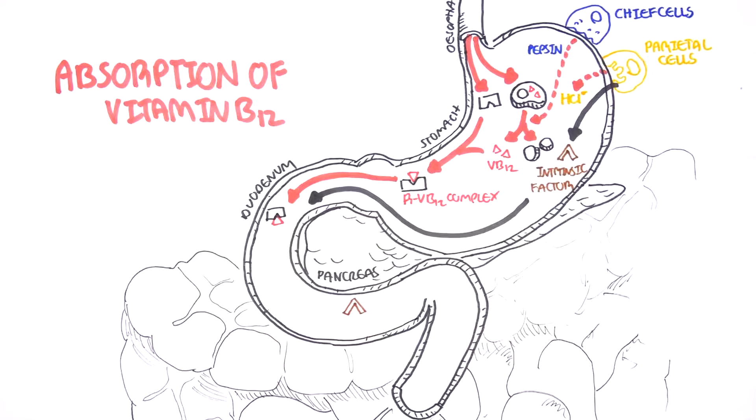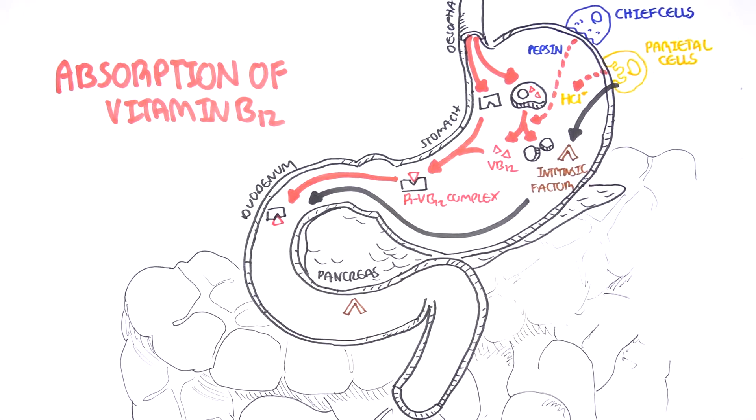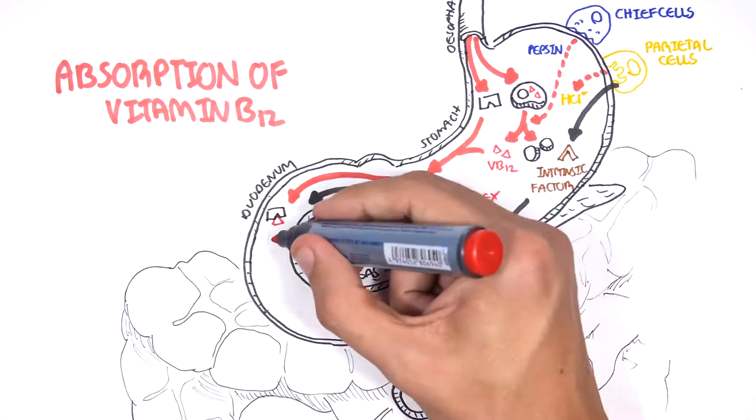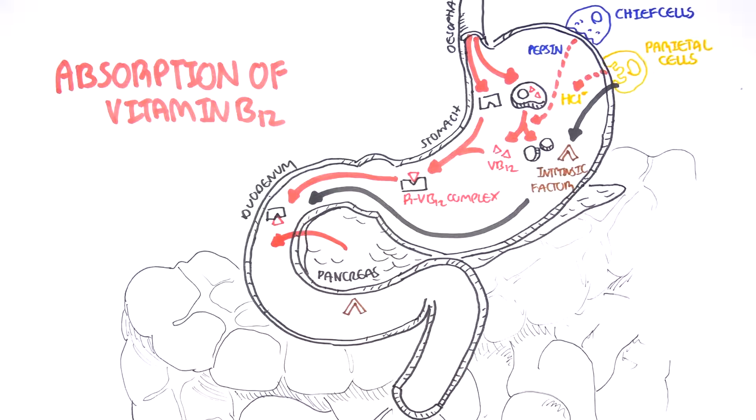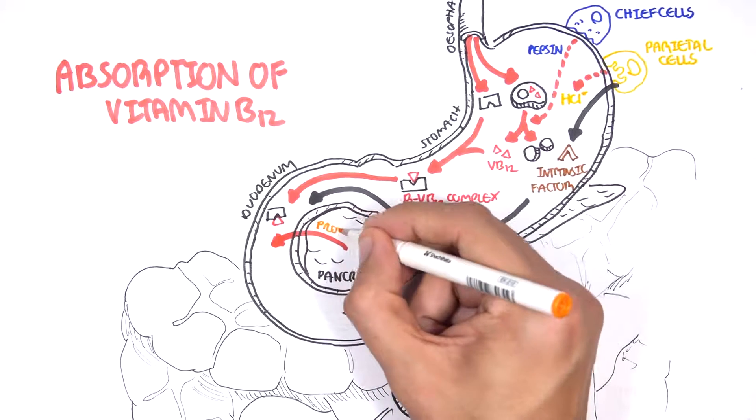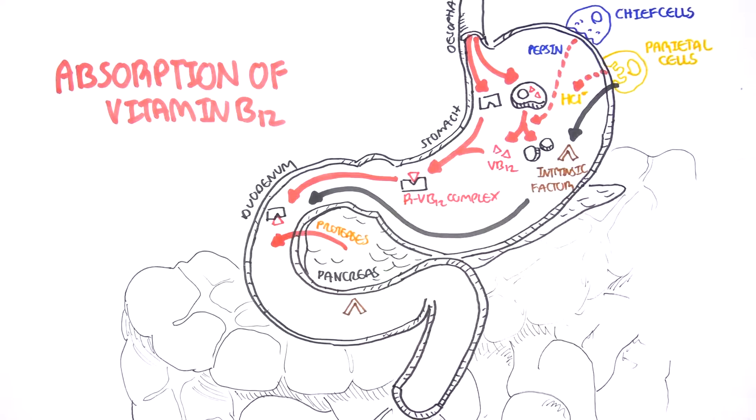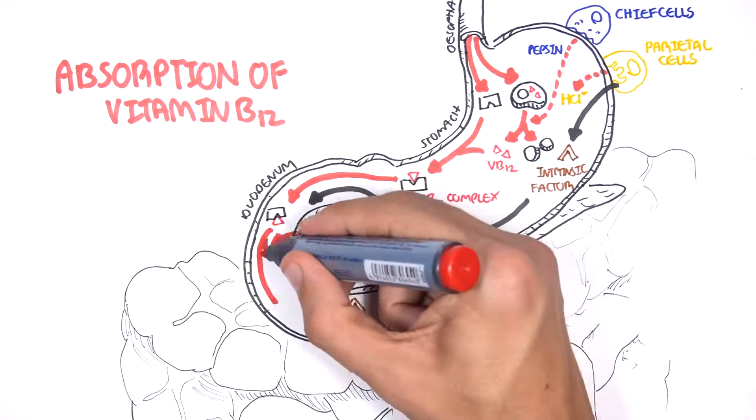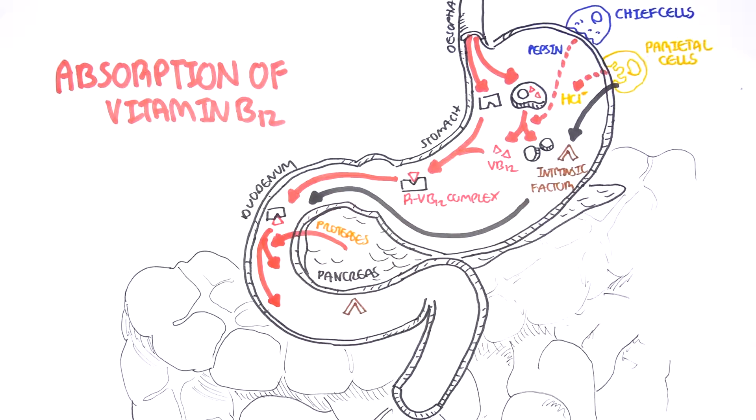Now within the small intestine, the pancreas secretes its juices, the amylases, the lipases, as well as proteases, which will break down protein. Proteases break down the R-binder, which will liberate the vitamin B12 once again.